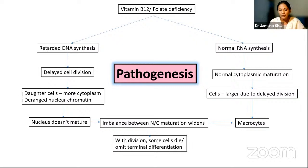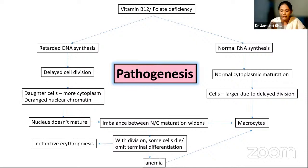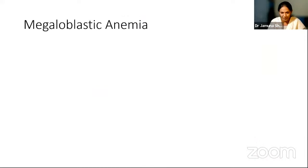Because the cells are not maturing properly, some cells will die in the bone marrow and terminal differentiation may not happen. This causes anemia because the cells don't mature and don't enter into the peripheral smear. Even if they come, they are very immature cells. Most of them die in the bone marrow itself — causing anemia, which we call macrocytic anemia. Since some cells are dying inside the marrow, there is ineffective erythropoiesis. As these cells die in the marrow, there is elevated indirect bilirubin, which causes jaundice. This is the pathogenesis of macrocytic anemia.